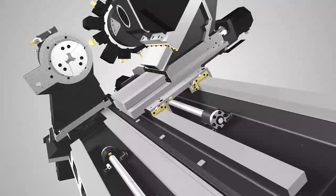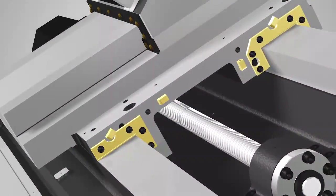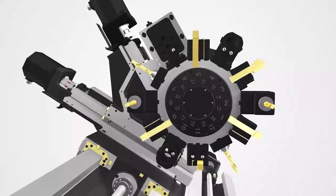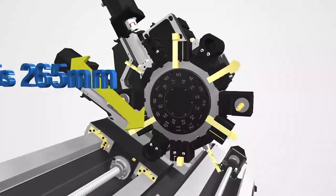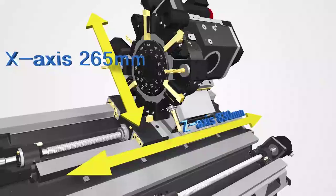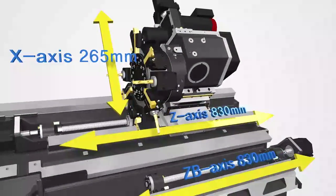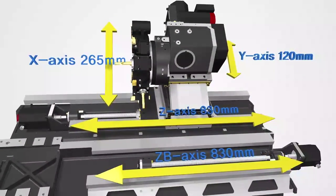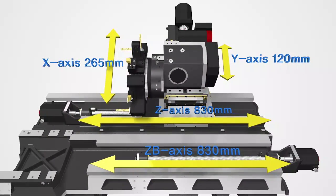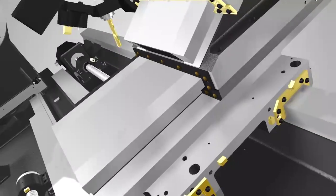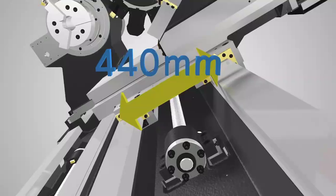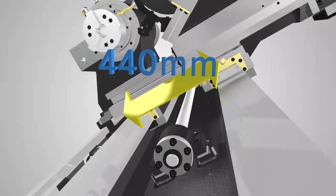Adapting box guideways, L2600SY can absorb vibration nicely. It is designed to enlarge the machining range. Travels of X, Z, ZB and Y axis is 265mm, 830mm, 830mm, 120mm respectively, which is the best in its class. The distance between Z guideways has been widened from 420mm to 440mm, improving feed stability.